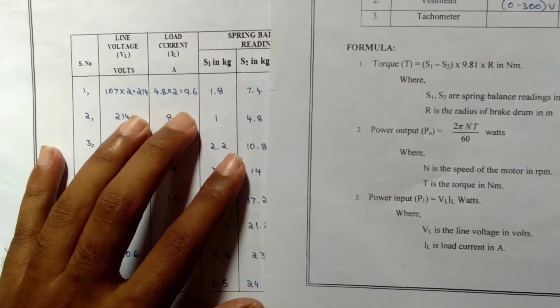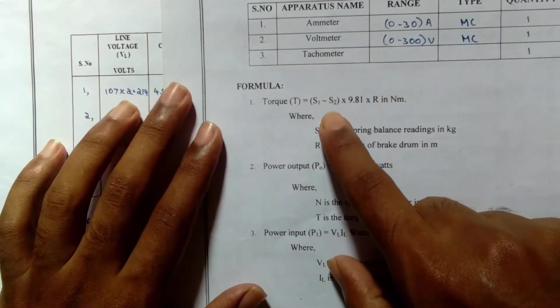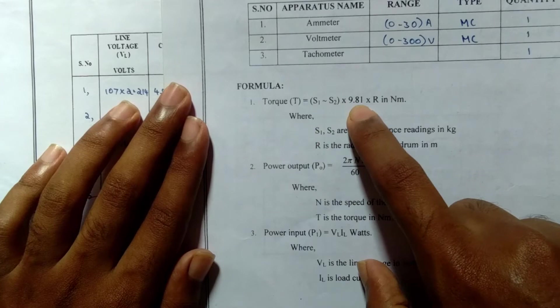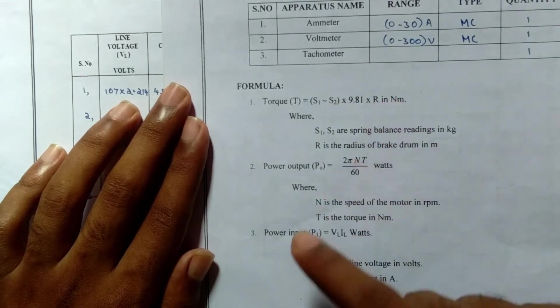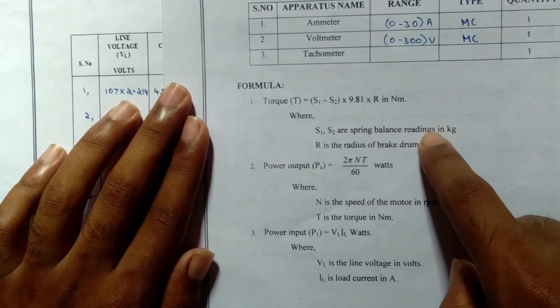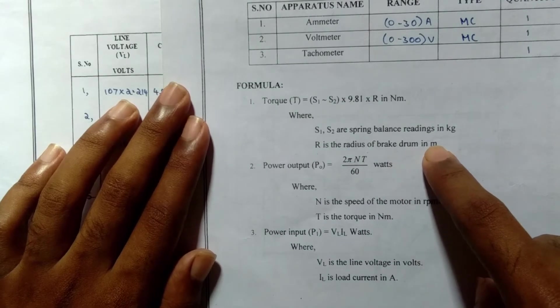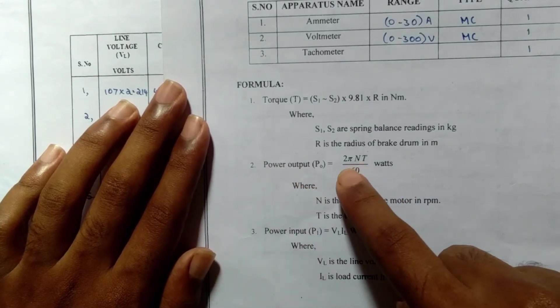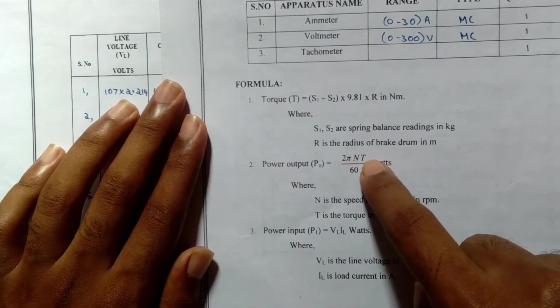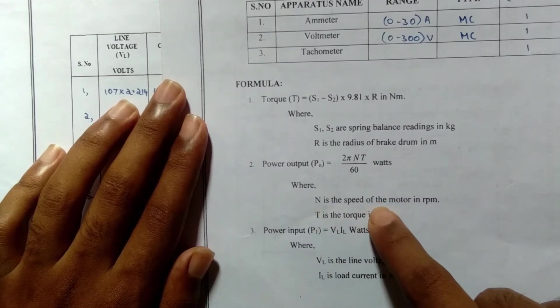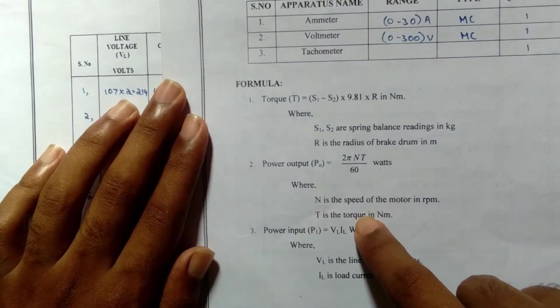The formula for torque is T equals (S1 minus S2) times 9.81 times R. S1, S2 are the spring balance readings, R is the radius of the brake drum. Power output is equal to 2πNT divided by 60, where N is the speed of the motor and T is the torque.